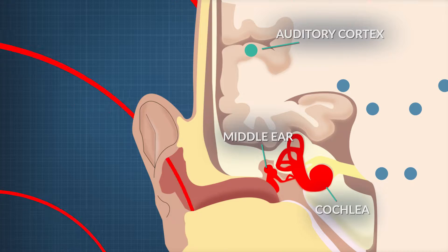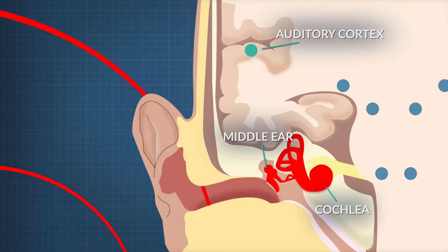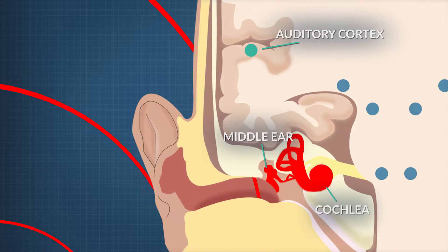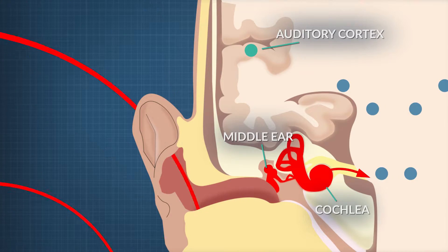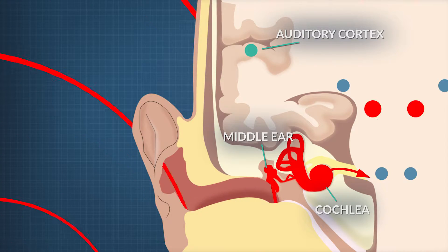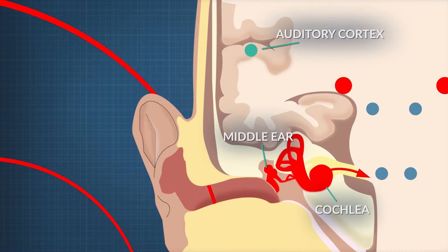That's where the cochlea is located, which has many thousands of cells called hair cells — so called because they have little tufts on them. The hair cells act as receptors and change the vibrations into electrical energy. Those electrical signals are sent to the brain, which, also using electricity, tells you that you are hearing a sound and what that sound is.